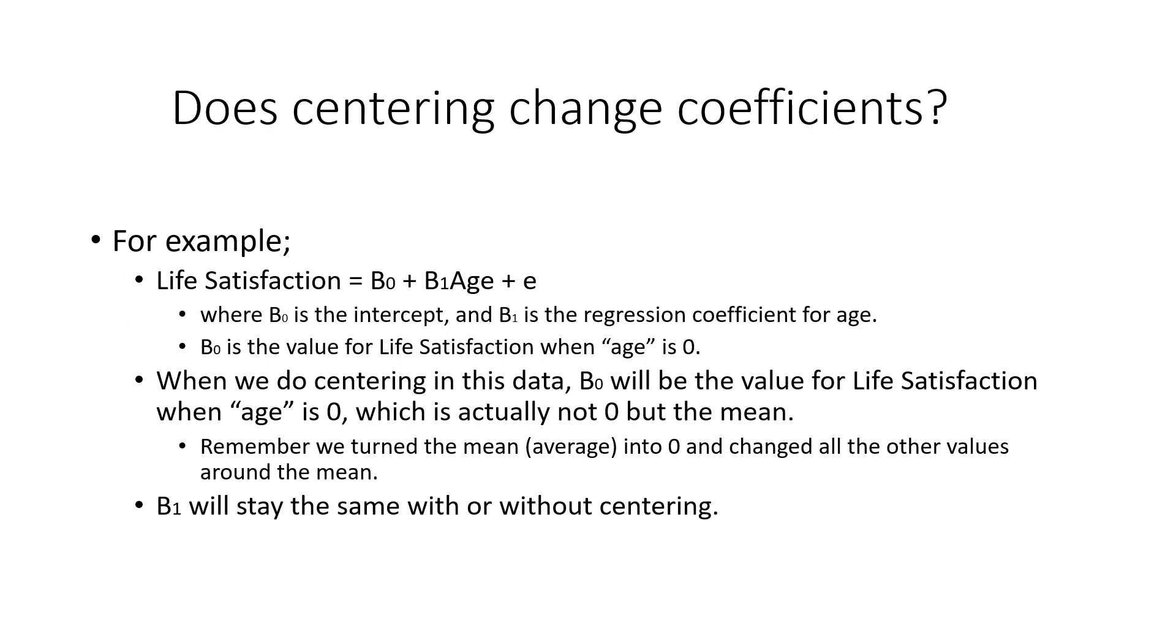For example, here we have the life satisfaction as the output. We have B0 as the intercept. B1 is the regression coefficient. And E is the error. However, when we do the centering, our B0 becomes meaningful. And B0 will be the value for life satisfaction when age is 0, which is actually not 0 now, but the mean, but the average, because we have done the centering. 0 now represents the average. And B1, the regression coefficient for age, stays the same with or without centering.